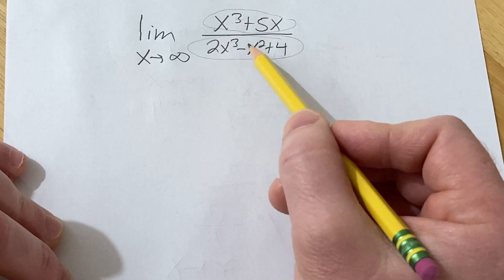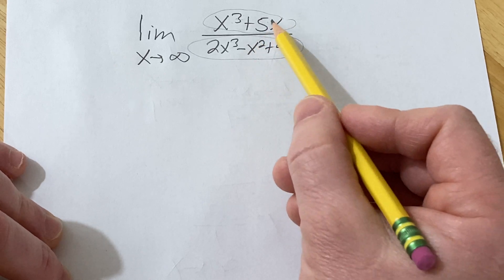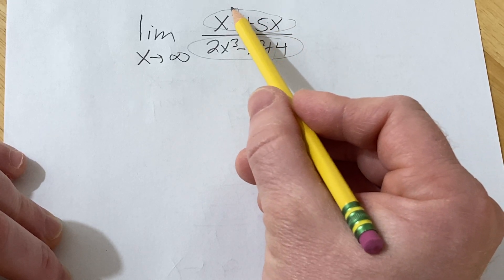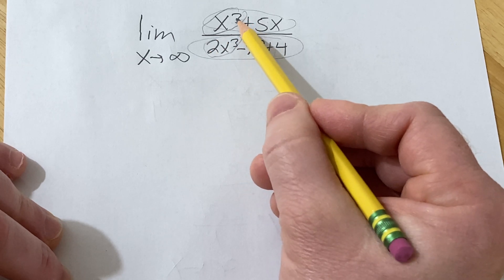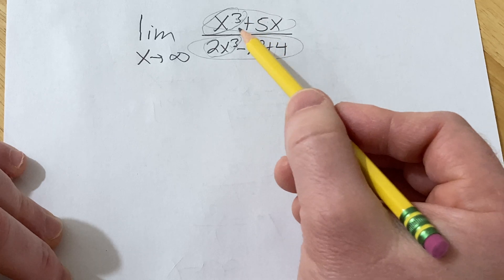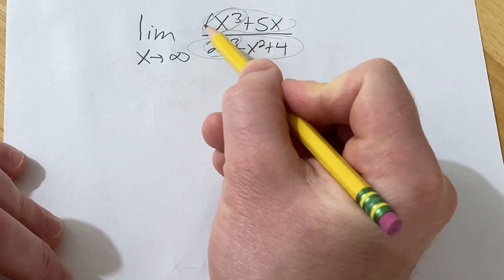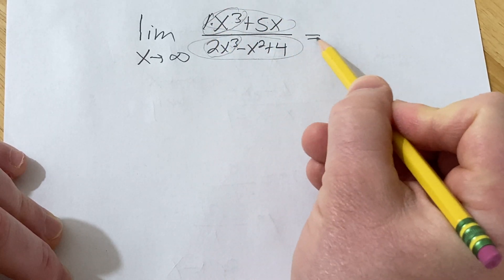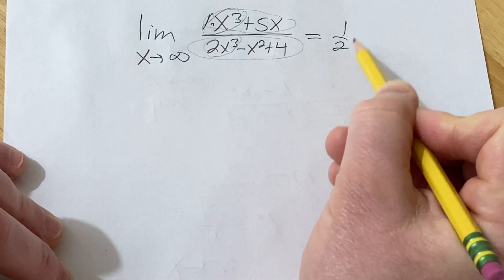So basically when x is really big we can ignore all of these other terms and all we care about is the dominant terms, these x cubed terms. And because they're growing at exactly the same rate, the answer is simply going to be the ratio of the leading coefficients. So there's a 1 here, so it's just going to be 1 over 2. And that's the answer.